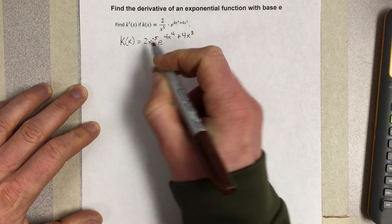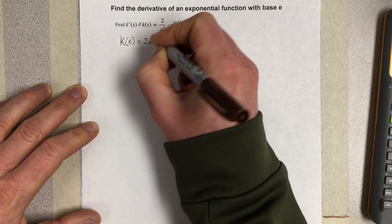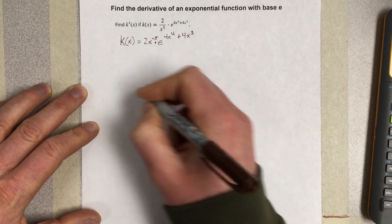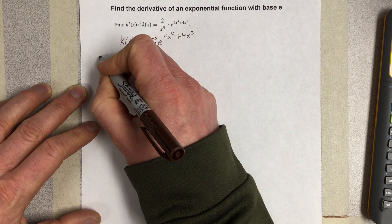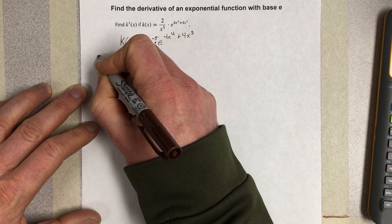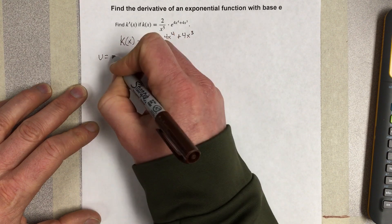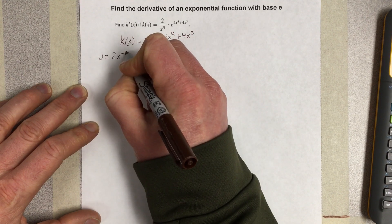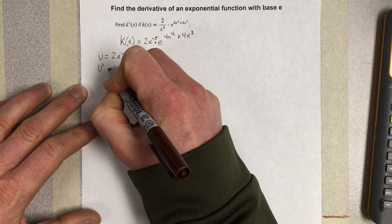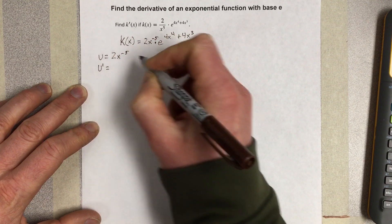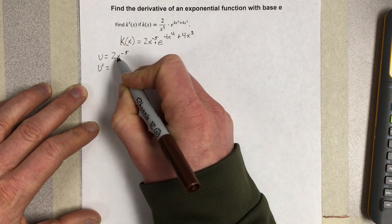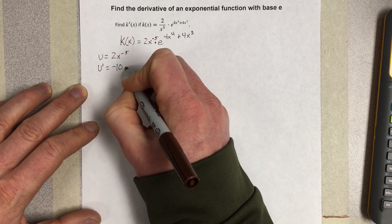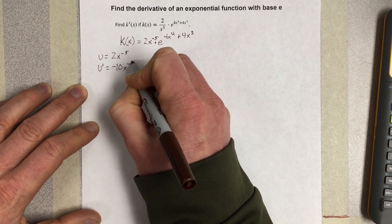We have a multiplication here, and we will have u equal to 2x to the negative 5th. u prime is equal to negative 10x to the negative 6th.